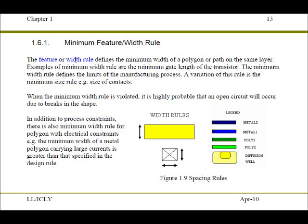The minimum feature or minimum width rule defines the minimum width of a polygon or path. We talk about a polygon when drawing devices and a path when drawing conductors. This rule applies to the minimum width of a polygon or path on the same layer.